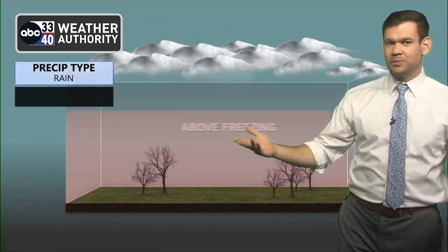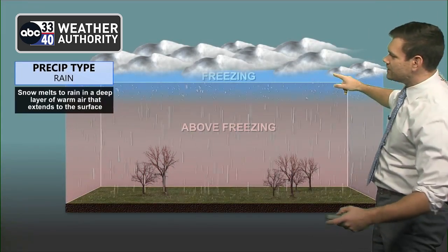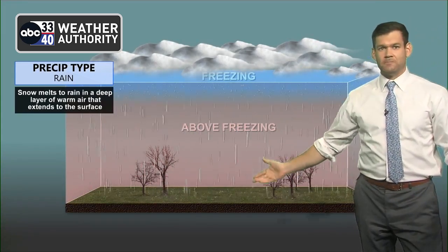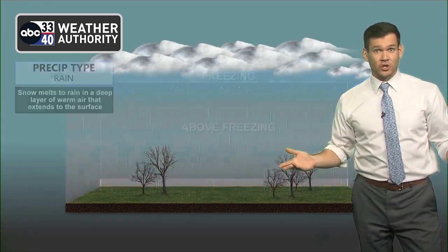With rain, it's pretty simple. You've got snow initially, and then it melts through a warm layer all the way to the surface, and you get just a cold rain.